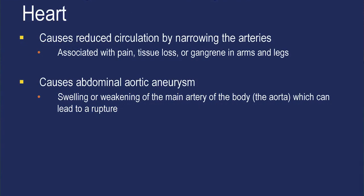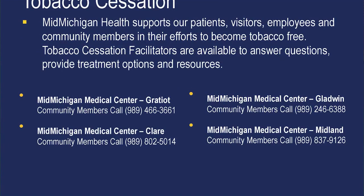The next major risk factor for heart disease and stroke is smoking. Smoking can cause reduced circulation by narrowing the arteries. It can also cause abdominal aortic aneurysm — a swelling or weakness in the main artery of the body, the aorta — which can lead to rupture. Quitting smoking now can greatly reduce your risk of heart disease and stroke into the future.